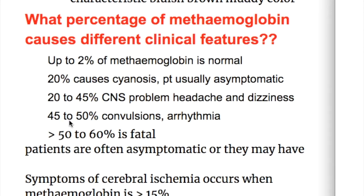What percentage of methemoglobin causes different clinical features? Up to 2% methemoglobin may be normal. After that it is pathological. Up to 15% causes cyanosis, but the patient is usually asymptomatic. More than 20% causes CNS problems — headache, dizziness. More than 45% causes convulsions and arrhythmia, and more than 50 to 60% it is fatal.